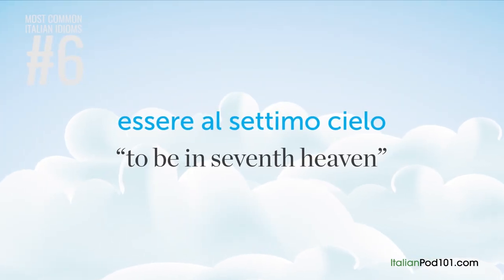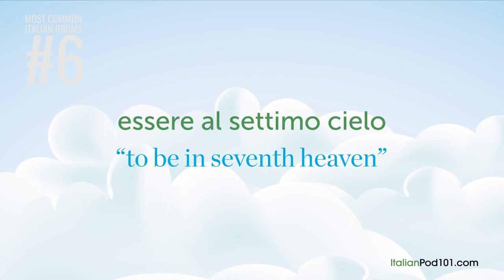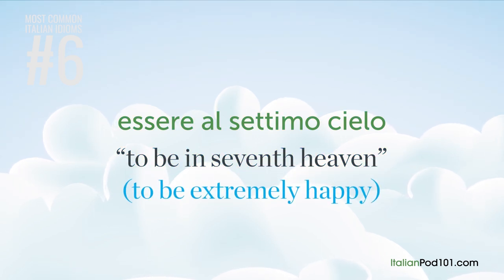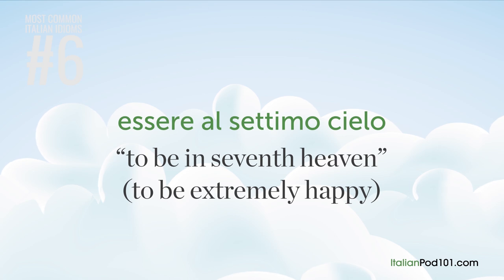Essere al settimo cielo — this idiom has a perfect English analog: 'to be in seventh heaven,' meaning to be extremely happy. This expression comes from the philosophy on which Dante's comedy is based. According to this philosophy, the earth is in the center of the universe, surrounded by seven concentric heavens — the seventh heaven was the highest degree of elevation for man.